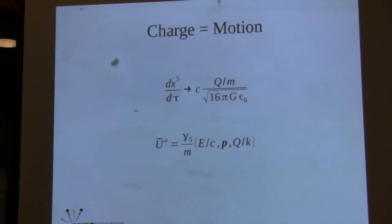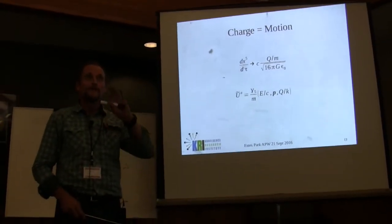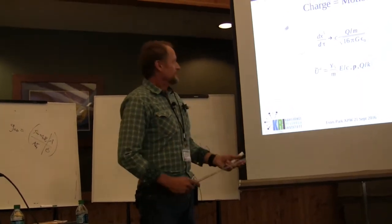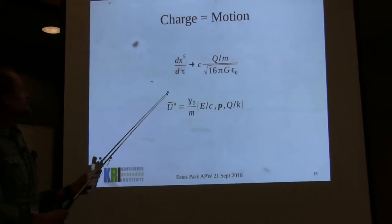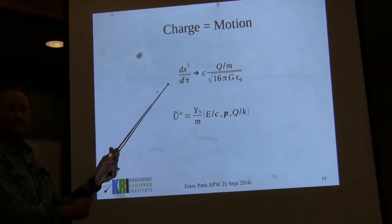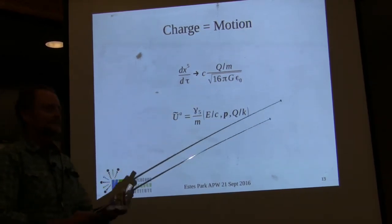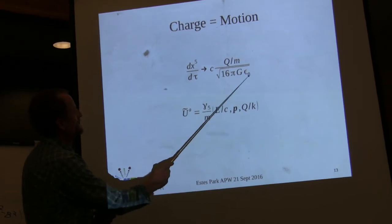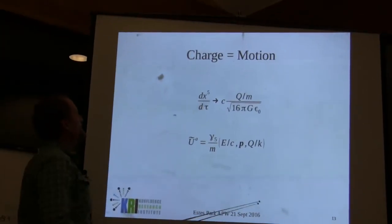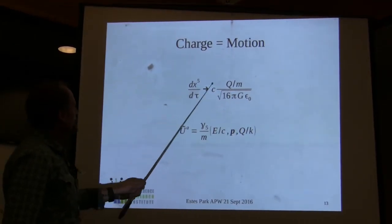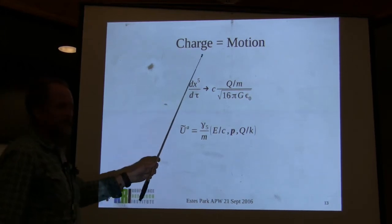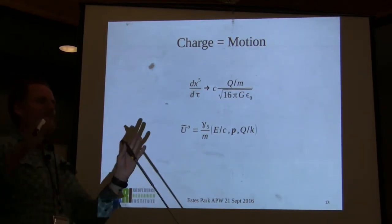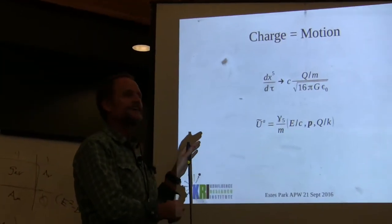To make that identification work, we get the Maxwell field strength tensor in the term linear in the four-velocity. We have to identify the proper speed in the fifth dimension with charge-to-mass ratio. Kaluza realized this - he identified electric charge as motion in the fifth dimension. So if you see an electron sitting on your bench, it's actually moving through the fifth dimension, but since we live in three dimensions, it doesn't appear to move. No progress has been made on this for a century.